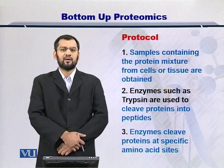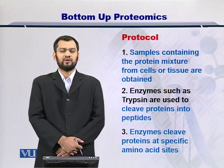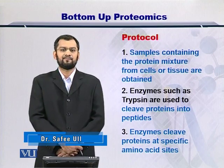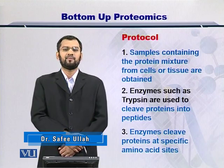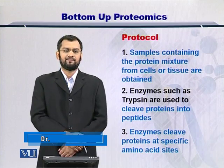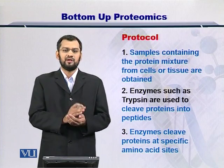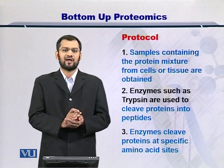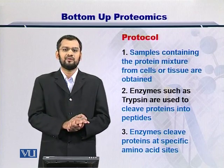To begin with the bottom-up proteomics protocol, the first thing you have to do is take the sample which contains multiple proteins and separate them using a gel. Once you have separated the proteins on a gel, then you can take a protein and treat it with an enzyme which will cleave it at specific sites, and you will have several peptides resulting from the process.